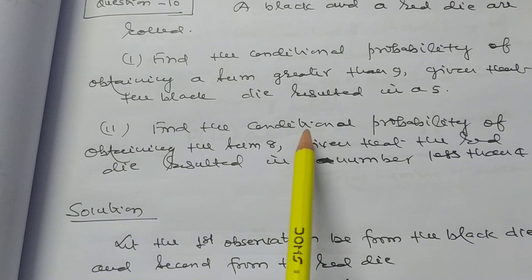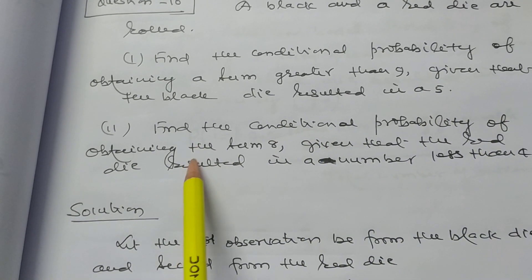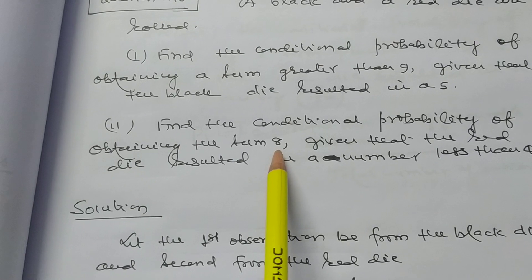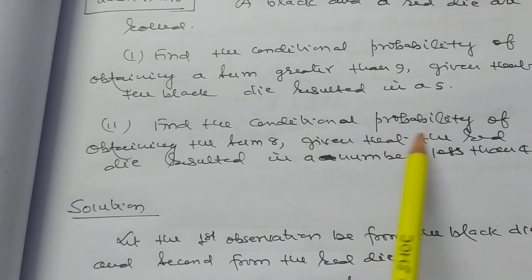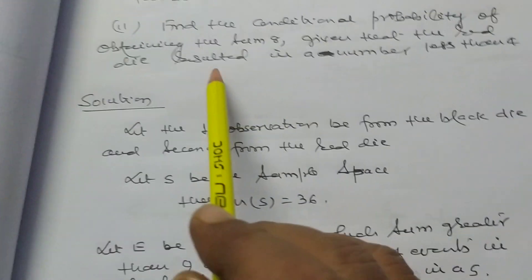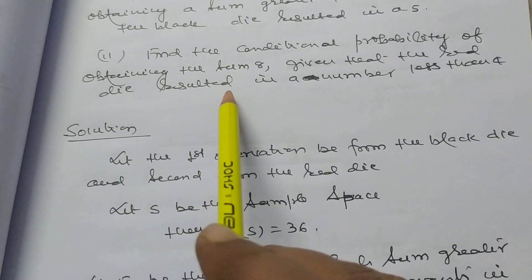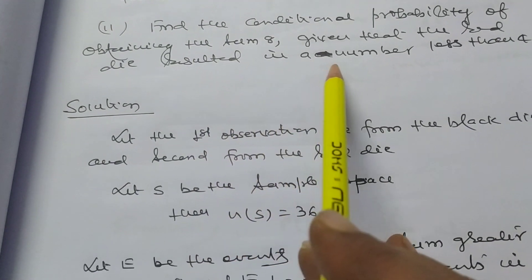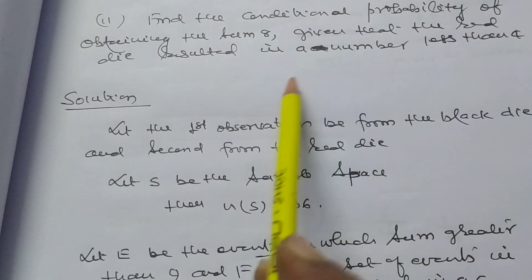Find the conditional probability of obtaining the sum 8, given that the red die resulted in a number less than 4.